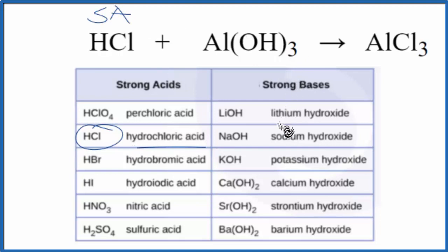For our bases, we don't see aluminum hydroxide. It's not here, so it's not going to be a strong base, it'll be a weak base. Now we know the strength of the acid and the base.